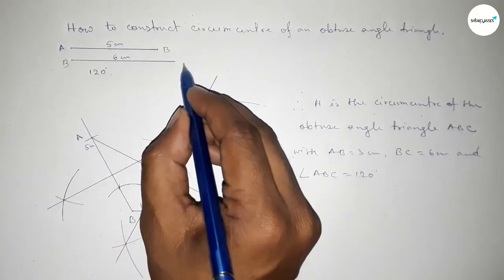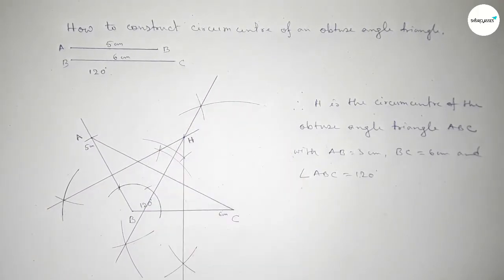So that's all — this is AB and this one is the BC line. Thanks for watching. If this video is helpful to you, please share it with your friends. Thanks for watching.